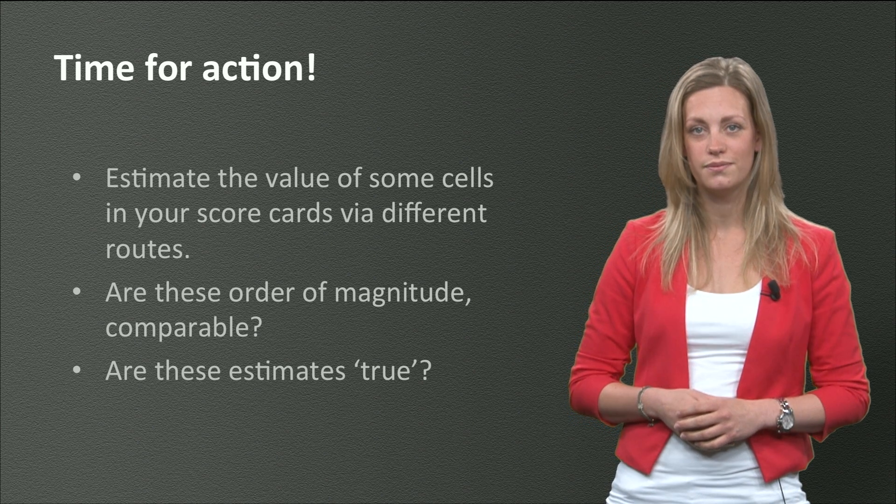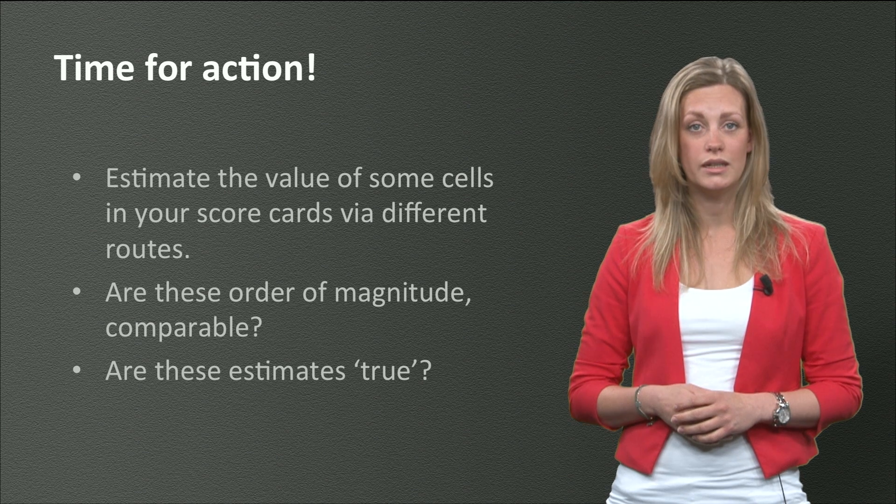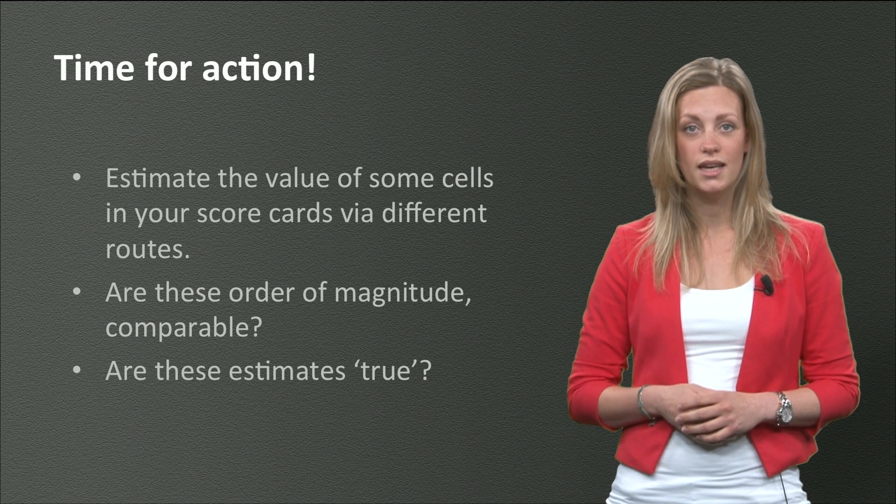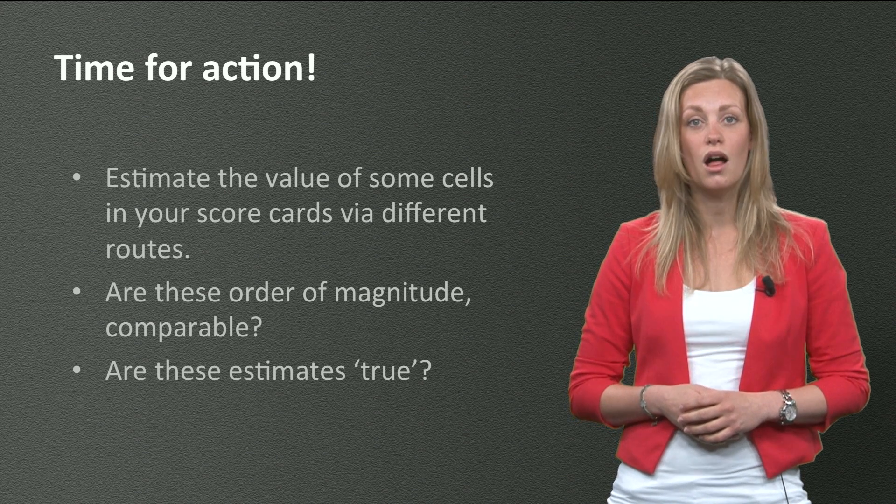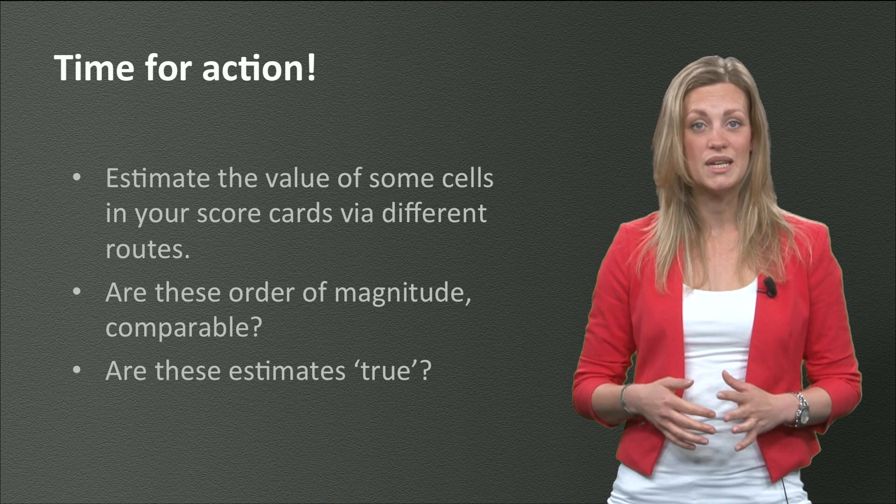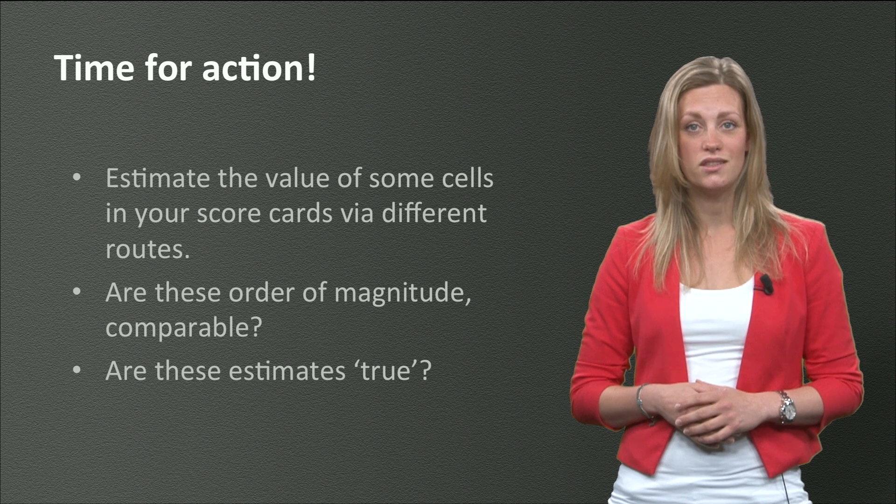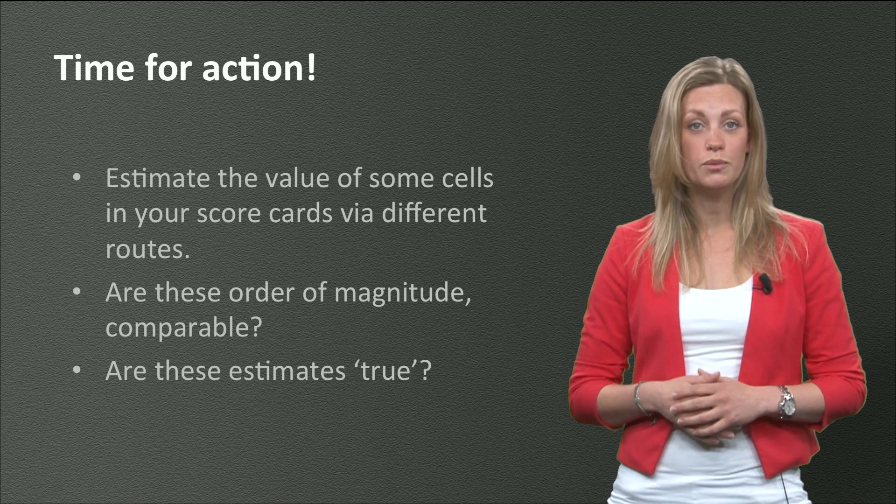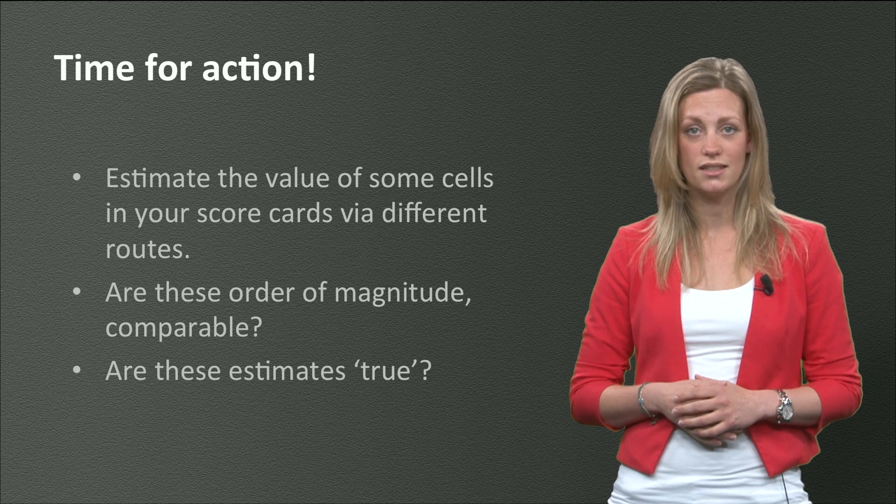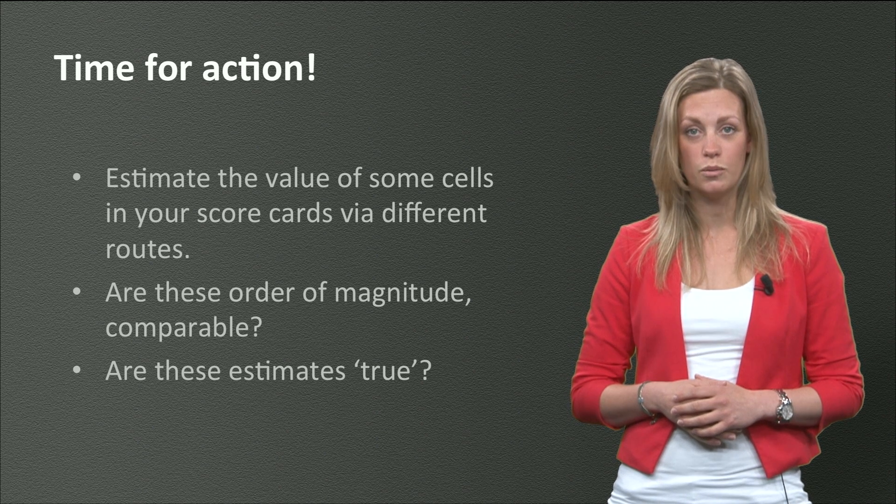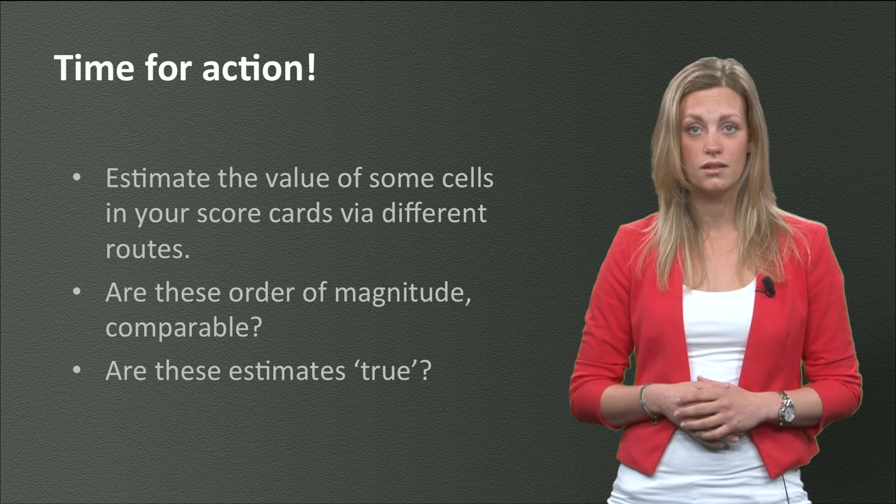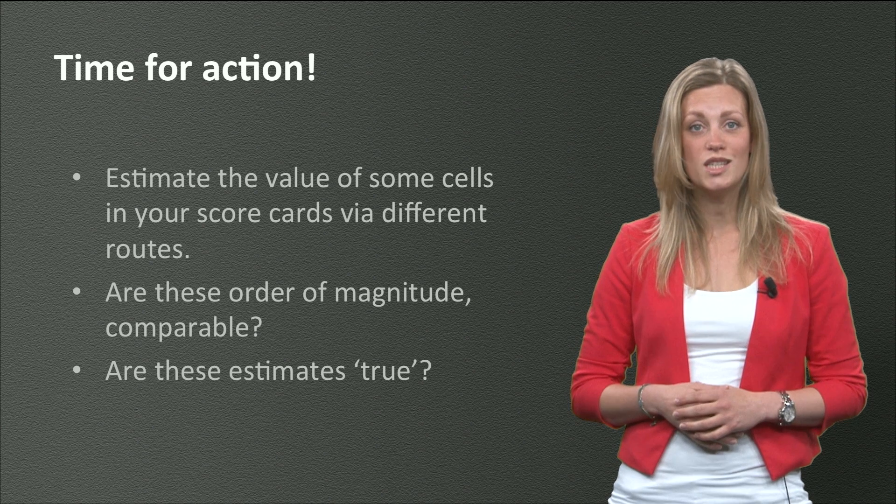Now, turn to your scorecard. There will be quite some alternatives and quite some criteria. It is most useful if you can fill all the cells in the table. That means determining the effects of the alternatives on the criteria. There are many ways to do this. You can either look in books, articles or search the internet. You can also set up experiments or consult experts.